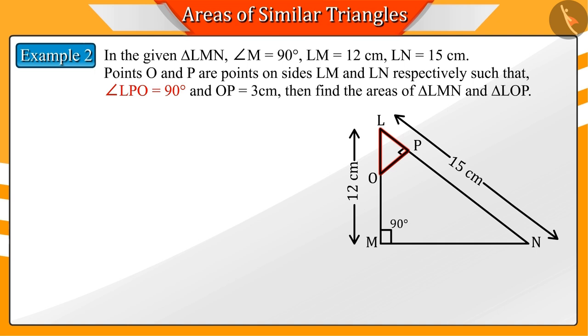Points O and P are points on LM and LN respectively, such that angle LPO is 90 degrees and OP equals 3 centimeters. So, with the help of the figure, can you find the area of triangle LMN and the area of triangle LOP?